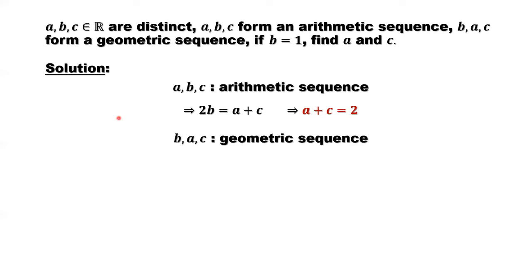Second given condition: in this order B, A, C form a geometric sequence. What is a geometric sequence? Geometric sequence has a common ratio. This means B over A equals A over C. This means A squared equals B times C. The middle square equals the product of the left side one times the right side one. Since B is 1, A squared equals C.